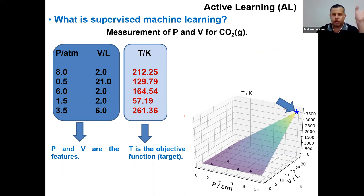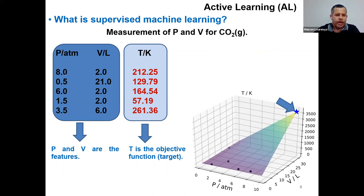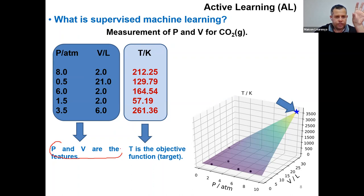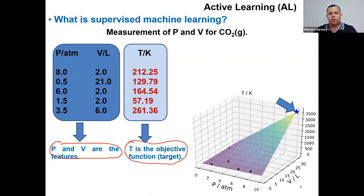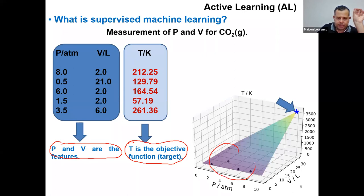Let's think that we have some measurements in the laboratory: we measure the pressure P and volume V of CO2 gas and we have temperature T as the response. We have five measurements and five responses. In machine learning, we call these variables descriptors or features, and T is our target or objective function. We have this surface — it's a simple, didactic problem — and our goal is to take these five data points and maximize the temperature using as few experiments as possible.